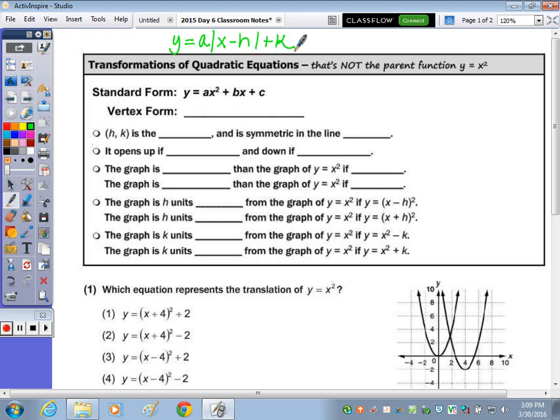I want you to recall the equation in vertex form of absolute value, which is y equals a times the absolute value of x minus h plus k, where h, k is the vertex.